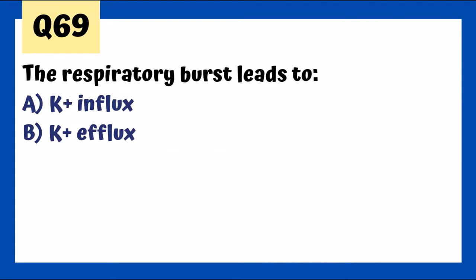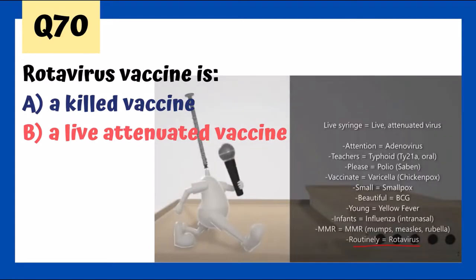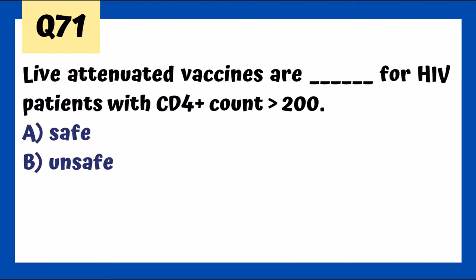The respiratory burst leads to potassium influx due to depolarization of the phagosomal membrane. Rotavirus vaccine is a live attenuated vaccine. The mnemonic: 'attention teachers, please vaccinate small beautiful young infants with MMR routinely' — representing all live attenuated vaccines. Rotavirus is represented by 'routinely' and is a live attenuated vaccine.